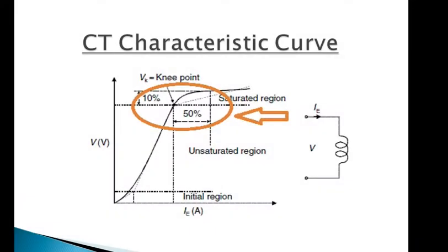If we look at the CT magnetization curve, we can see that the CT will get saturated after reaching the knee point voltage. As per IEC, knee point voltage is defined where a 10% increase in applied voltage will raise the excitation current by 50%.